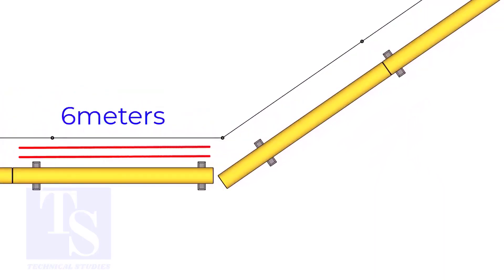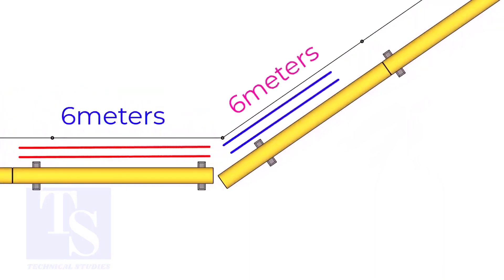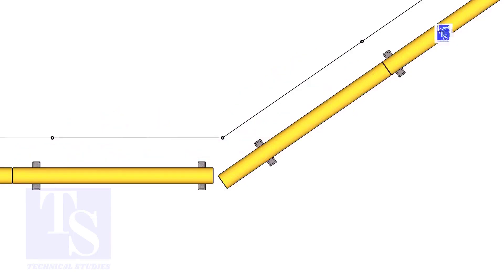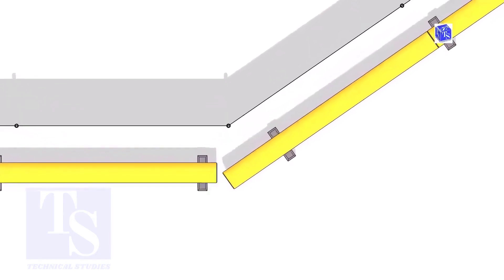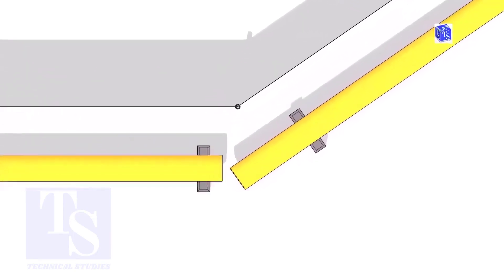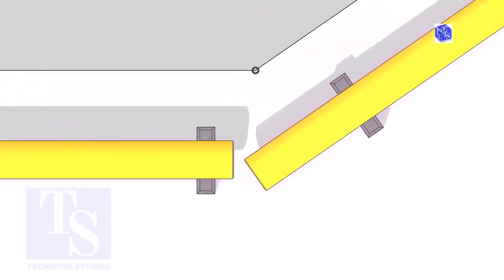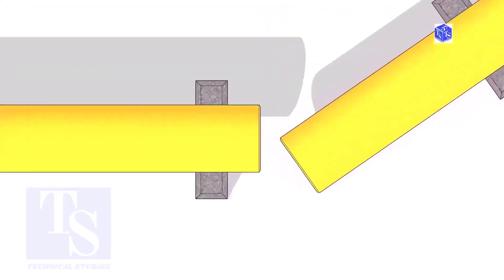The pipe shall be parallel to the fencing — not necessarily the entire length, but at least 6 meters on both sides. It is not necessary that the center lines of both pipes are in a line.